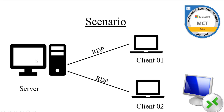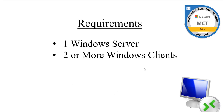So what happens normally when you attempt connecting two clients or more to a single system is that the second machine will cause the first connection to be disconnected. In this video I'm going to show you how you can perform multiple remote desktop connections to one server. You need a Windows Server operating system — any version from Windows Server 2012 up to Windows Server 2022.